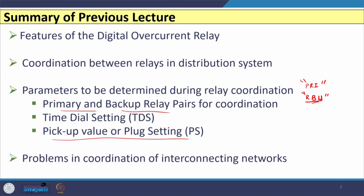After determining these three settings, manual calculation is not possible. The reason is that the network we consider may be a radial distribution network fed from multiple ends, a multi-source system, or a ring main system. When such different distribution network structures exist and the number of relays and distribution feeders is large, we have to use an algorithm and write code in some language, whose output will give these three settings.